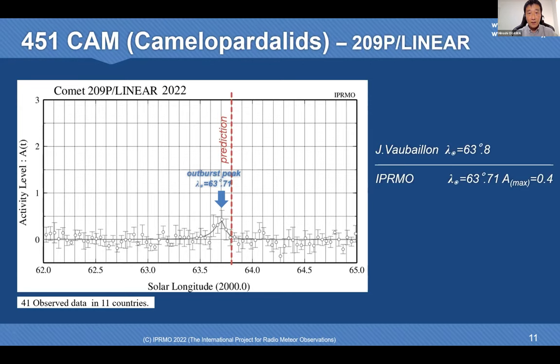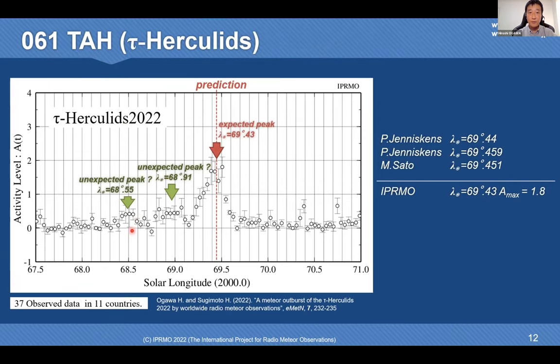This is one example of an outburst meteor shower. This figure shows the result from 2021. The number of data used was 41, from 11 countries. The prediction was here; the outburst peak was a little earlier than expected. In 2006, the main peak was observed at the predicted time, and it seems that some unexpected peaks occurred before the main peak.